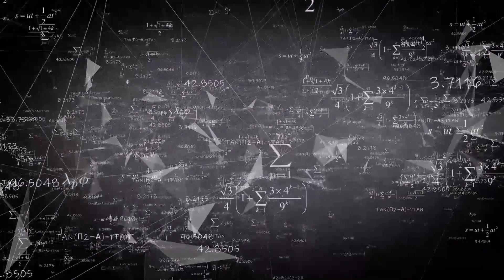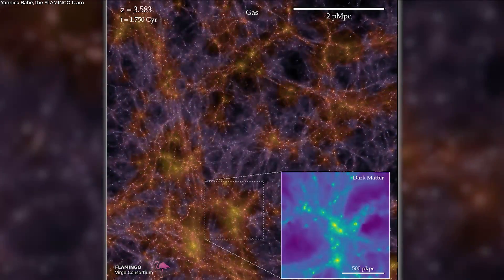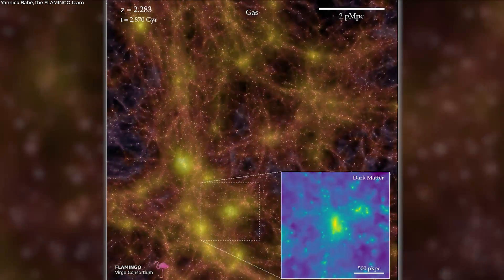This means that cosmologists must include fluid dynamics, a branch of physics that requires a lot of computing power in their simulations and Flamingo is the largest to do this.